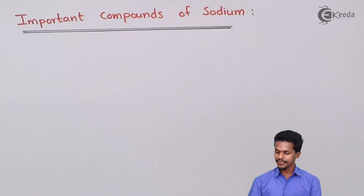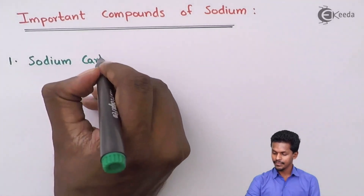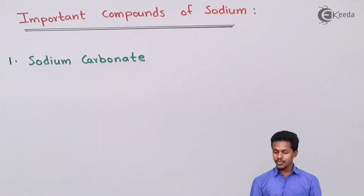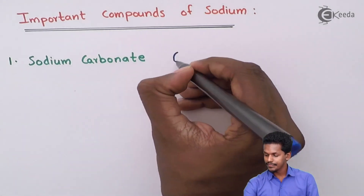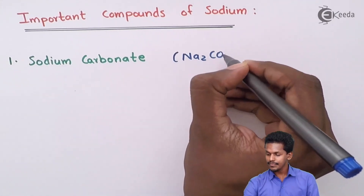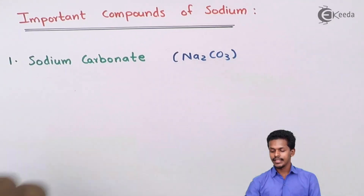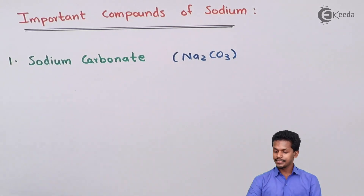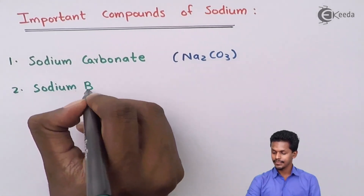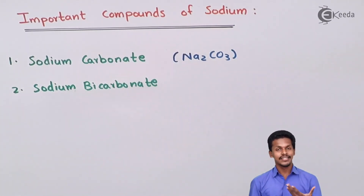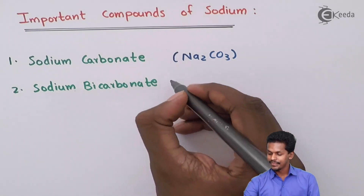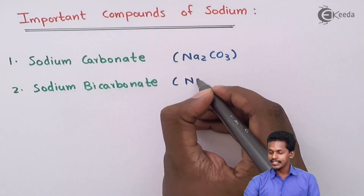The first compound is sodium carbonate, also known as washing soda, with the molecular formula Na₂CO₃. The next one is sodium bicarbonate, which is also known as baking soda, and it is represented as NaHCO₃.